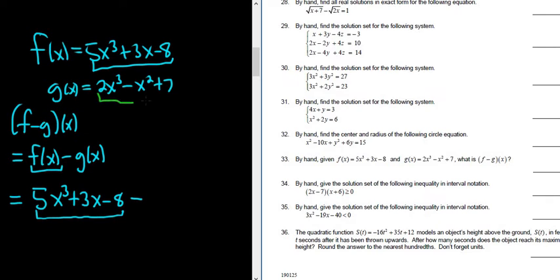f(x) minus g(x). So g(x) is 2x³ - x² + 7. Because it's three terms, we want to put it in parentheses: 2x³ - x² + 7 in parentheses. This piece here is your g(x).